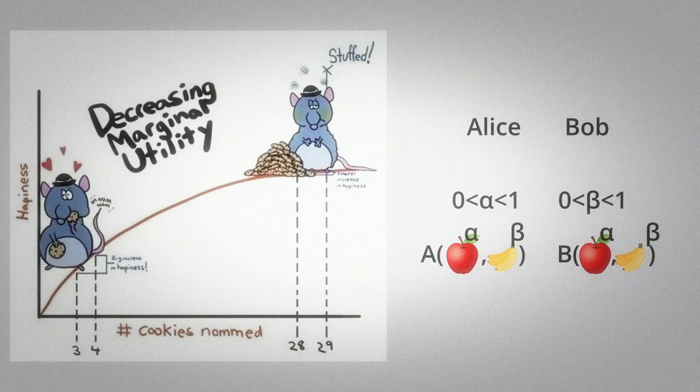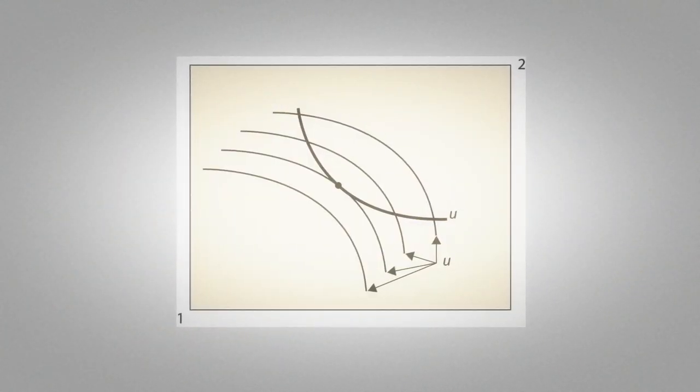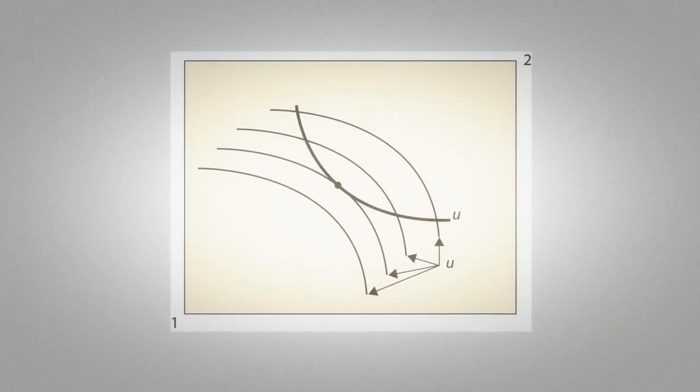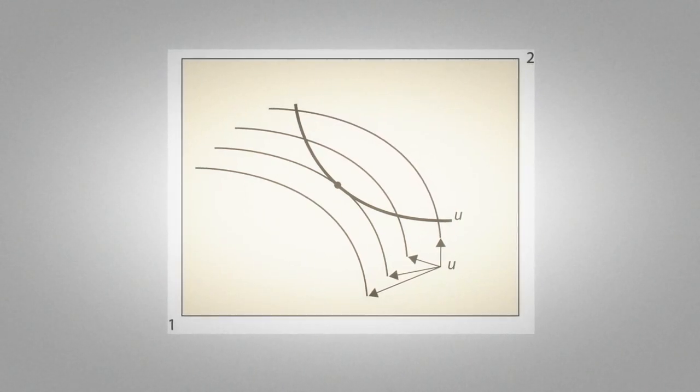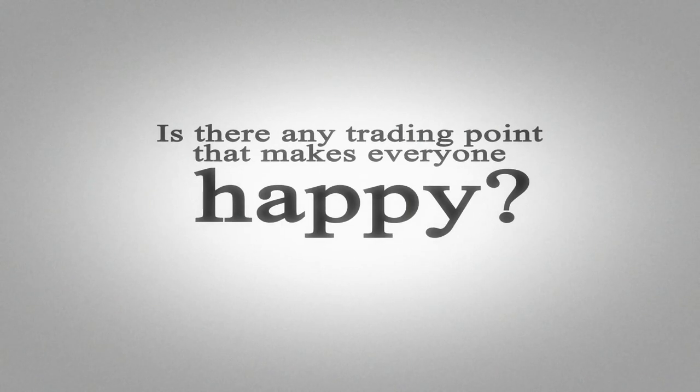In that way, we can calculate utilities for different allocations. Also, working with exponentiation makes our work easier when we are working with differential equations later on. When we draw the utility functions of Alice and Bob, we can see that at a certain point, it might be more rational to trade apples and bananas. But here, the question arises. Is there any trading point that makes everyone happy? Is it really possible?